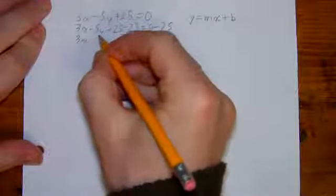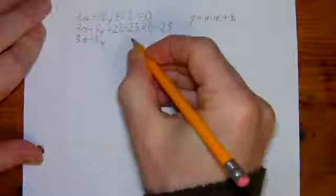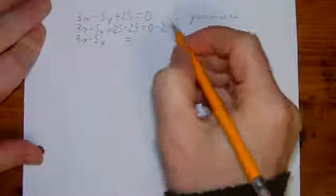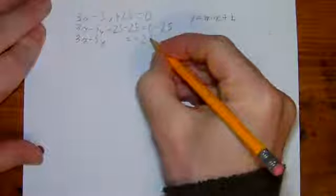So then I'll have 3x minus 5y. I'm going to leave a bit of space here that I'm going to use in a second. 25 minus 25 is 0. 0 minus 25 is negative 25.